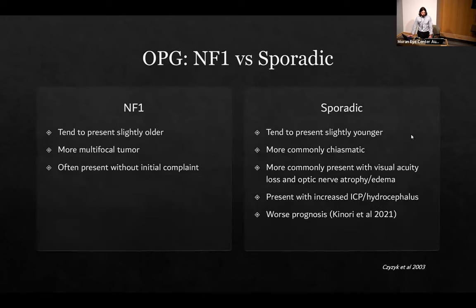Reviewing NF1 versus sporadic OPGs: those with NF1 tend to have a slightly older presentation, tumors in more variable locations, and are more likely to present without an initial visual concern. Sporadic tumors tend to be younger onset, more commonly in the chiasmatic region, often presenting with visual acuity loss or optic nerve atrophy or edema. They can present with signs of increased intracranial pressure and are associated with a worse prognosis.